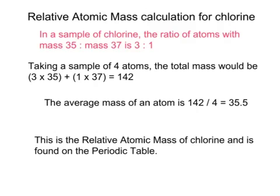When we look more closely at the atoms of chlorine, we see that in a sample of chlorine, 25% of them have got a mass of 37, whereas 75% of them have got a mass of 35. So the ratio of those weighing 35 to those weighing 37 is a ratio of 3 to 1.